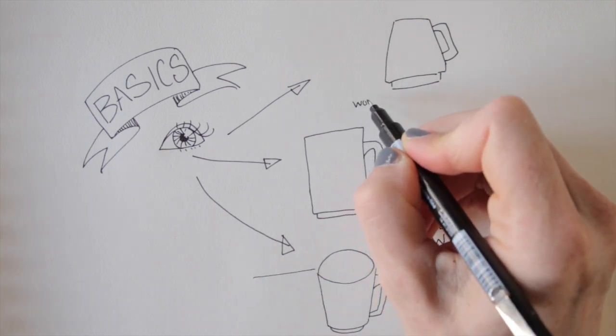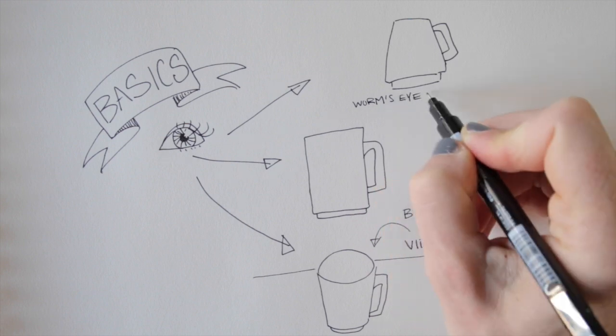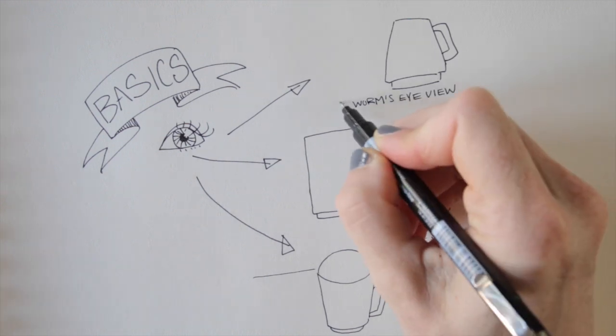The worm is very close to the ground, so the horizon is lower in the image. The worm's eye view.